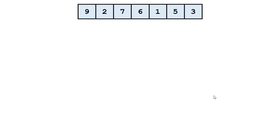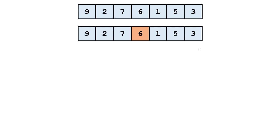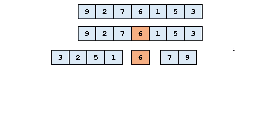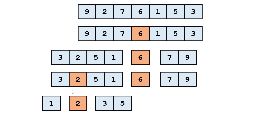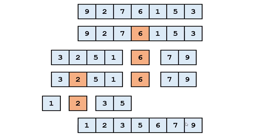Quicksort works by choosing a partition element — we pick the middle element — then rearranging the array so everything smaller than the partition moves to the left and everything greater moves to the right. We recursively do that. So in the left partition, we choose two as our partition and recursively quicksort that, moving everything smaller to the left and larger to the right. At that point, each piece of the array is sorted.